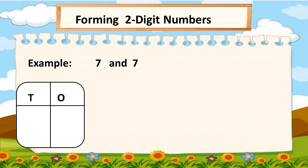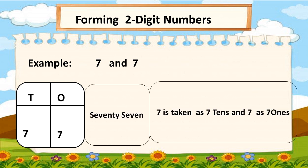Now, if we repeat seven, so this is seven tens and seven ones. So, the number is seventy-seven. Seven is taken as seven tens and seven as seven ones. So, this is number seventy-seven.